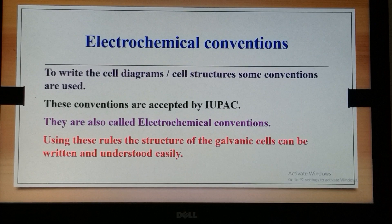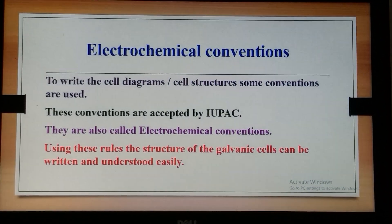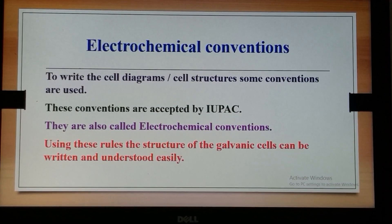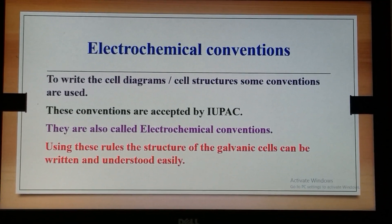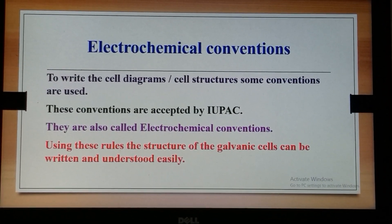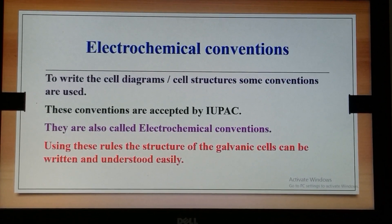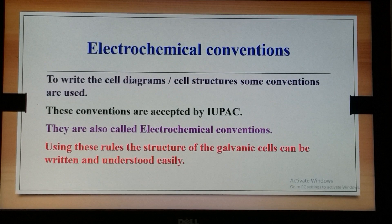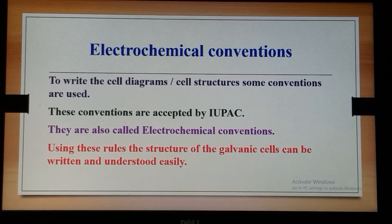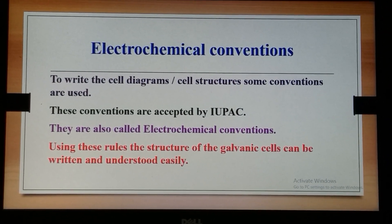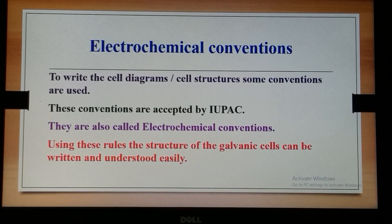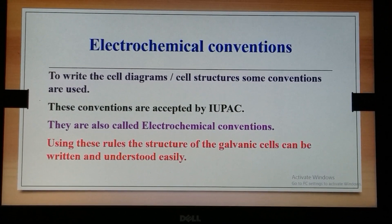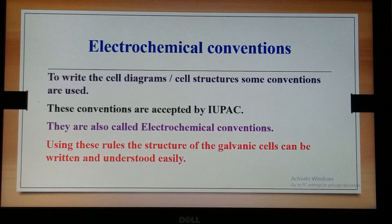Once we have understood the electrode potential and the single electrode potential, we should also learn how to write the representation of a galvanic cell, because a galvanic cell is made up of two half cells. I have already explained the working and construction of the galvanic cell in my lectures on electrochemical corrosion.